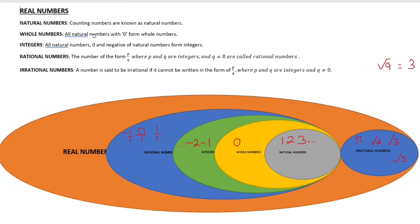All Natural Numbers with 0 forms Whole Numbers. Whole Numbers: 0, 1, 2, 3 to infinity.